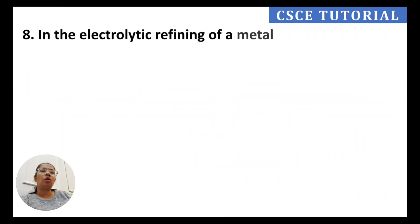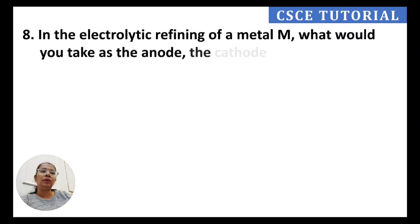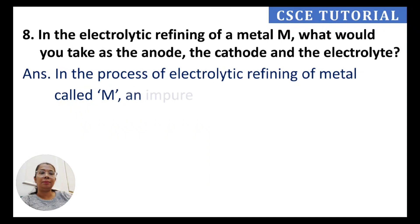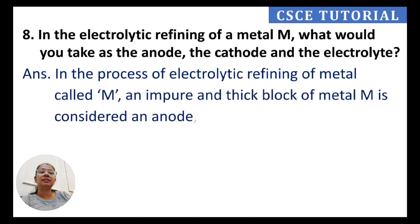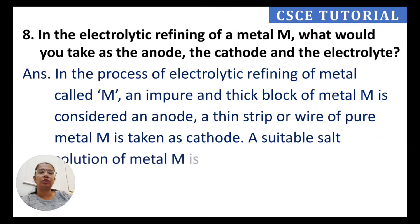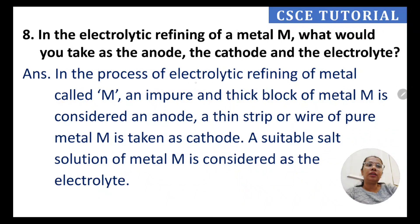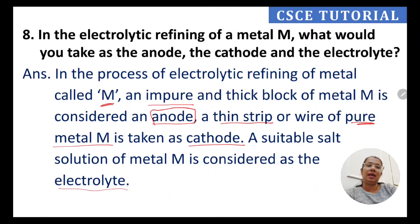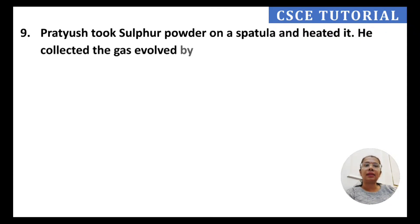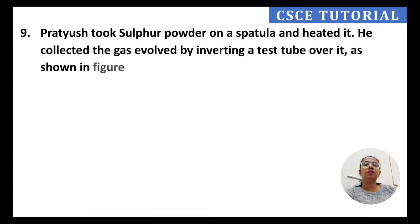Question 8: In the electrolytic refining of a metal M, what would you take as the anode, cathode, and electrolyte? An impure thick block of metal M is taken as the anode. A thin strip of pure metal M is taken as the cathode. A suitable salt solution of metal M is used as the electrolyte.